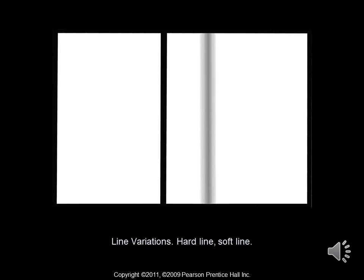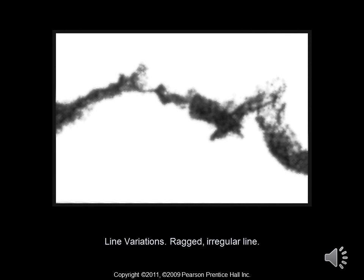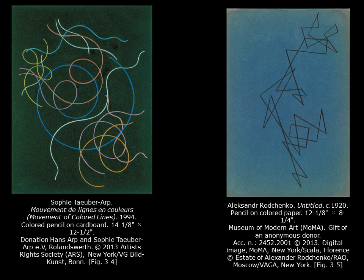Here we have two more variations of line. On the left we have a hard line, and on the right we have a soft line. Depending on your technique, a soft line can be made with charcoal or graphite that's been smudged with a smudge stick. You can also achieve this with paint, watercolor, many different methods, and also on the computer. And for the last of our line variations, we have a ragged, irregular line. This can be achieved by using charcoal on a rough piece of paper, or taking your pencil, lifting it, and changing it to the point where it meets the paper as you drag it across.